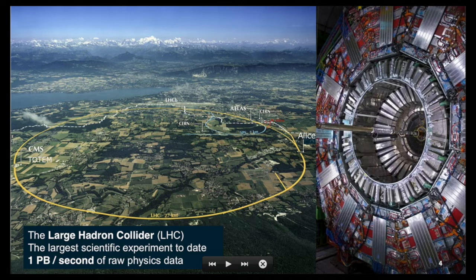The LHC is a particle accelerator — actually the most powerful particle accelerator in the world. It is built on the Franco-Swiss border, near Lake Geneva and the Alps, in a tunnel that is 27 kilometers long. Inside this ring, we accelerate particles at close to the speed of light and then make them collide against each other. The collisions happen at particular points of the ring where detectors are located, with layers of sensors that capture what happened in the collisions.